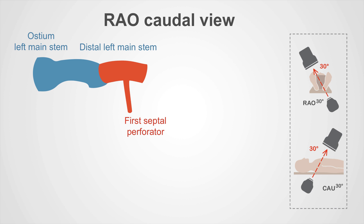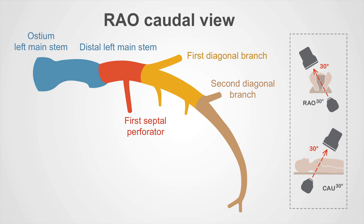As discussed in the previous image, the proximal LAD gives rise to a first septal perforator branch. As the LAD becomes the mid-LAD, it gives rise to a first diagonal branch. Following a second diagonal branch, the LAD becomes known as the distal LAD.